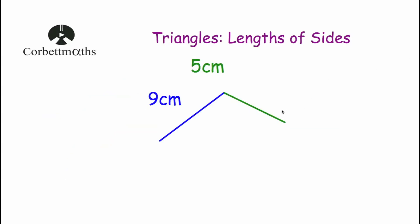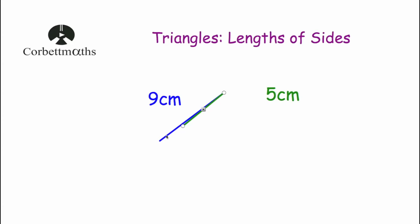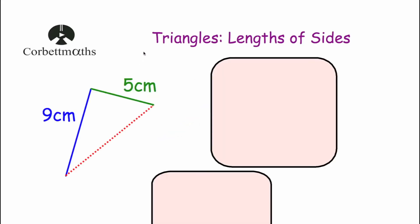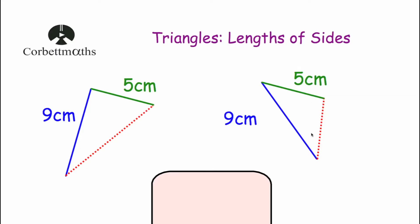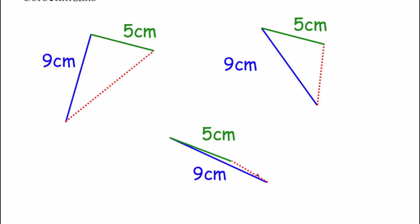Now let's see what happens whenever we make the angle between the two lines smaller and smaller. With our 5cm and 9cm lines, as we make the angle smaller, the length of the line joining the two ends gets smaller and smaller, right up until the lines are nearly on top of each other. Once they're on a straight line it wouldn't be a triangle anymore, so the third side would be anything just bigger than 4cm — it couldn't be exactly 4cm, but maybe 4.1cm and so on.